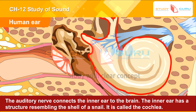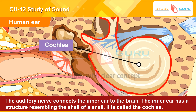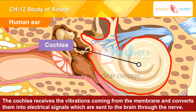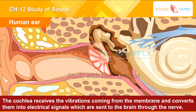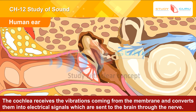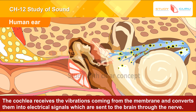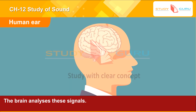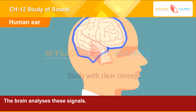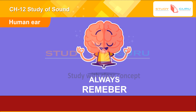The auditory nerve connects the inner ear to the brain. The inner ear has a structure resembling the shell of a snail, called the cochlea. The cochlea receives the vibrations coming from the membrane and converts them into electrical signals, which are sent to the brain through the nerve. The brain analyzes these signals.